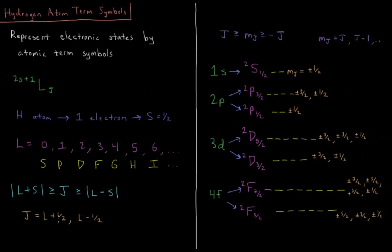Or I really should say the absolute value of those two. Because if L is 0, j can only be 1 half. All right, then the value of m sub j, the z component of the total angular momentum, goes from minus j up to j, descending as integers or half integers.